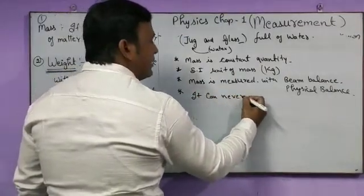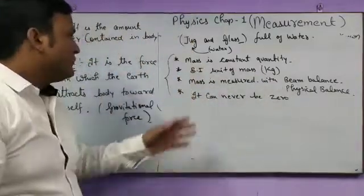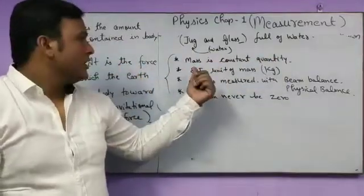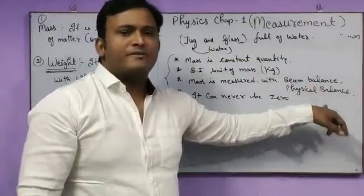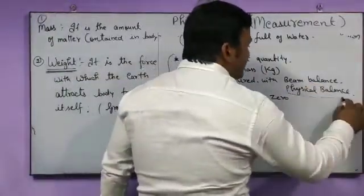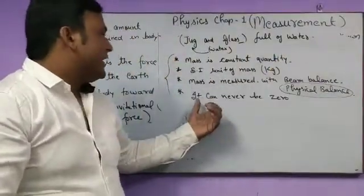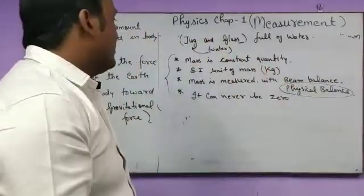It can never be zero. These are the four major points on which we have seen: mass is constant quantity, cannot change; unit of mass is kg; it is measured with beam and physical balance; it can never be zero.